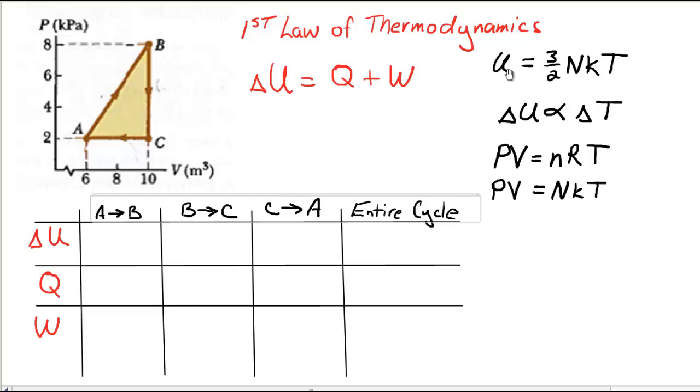U itself, the internal energy, can be calculated by going 3 over 2 times nKT, or we can say it's 3 over 2 nRT, depending on which constants we would rather use. So that means U is related to the temperature directly. If the temperature of the gas goes up, then my internal energy goes up. In other words, our change in U is related to our change in temperature.